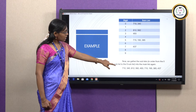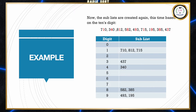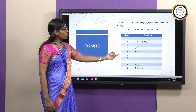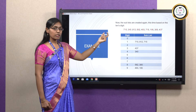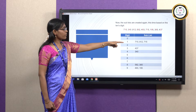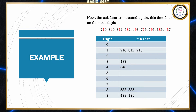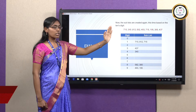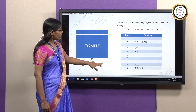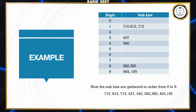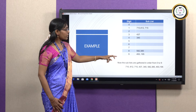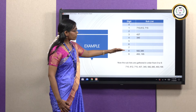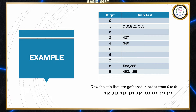Now we take this new array and sort by the 10s digit. For 710, the 10s digit is 1, so we place it in sub-list 1. For 340, the 10s digit is 4, so we place it in sub-list 4. For 812, the 10s digit is 1, so it also goes in sub-list 1. We continue placing each element into the sub-list corresponding to its 10s digit. Once arranged in order, the second array becomes: 710, 812, 715, 437, 340, 582, 385, 493, 195.